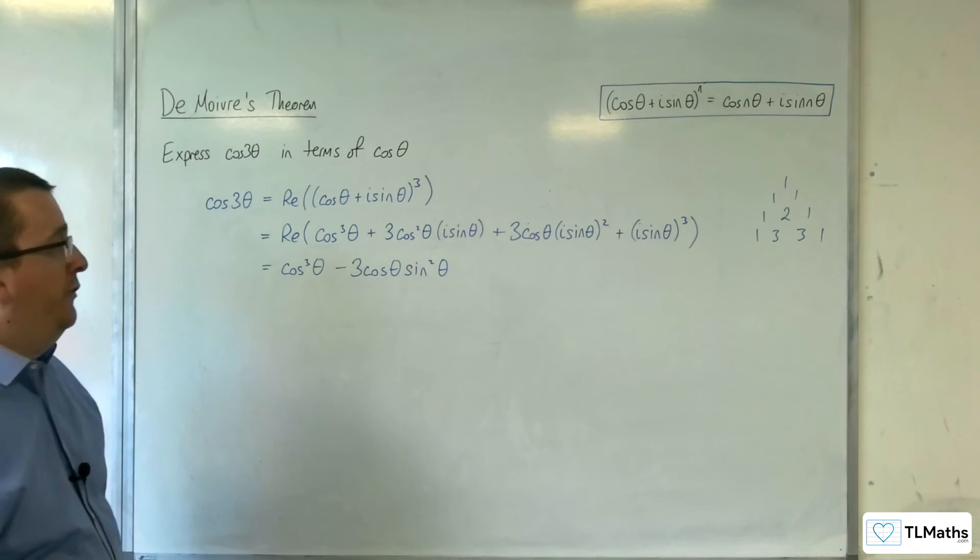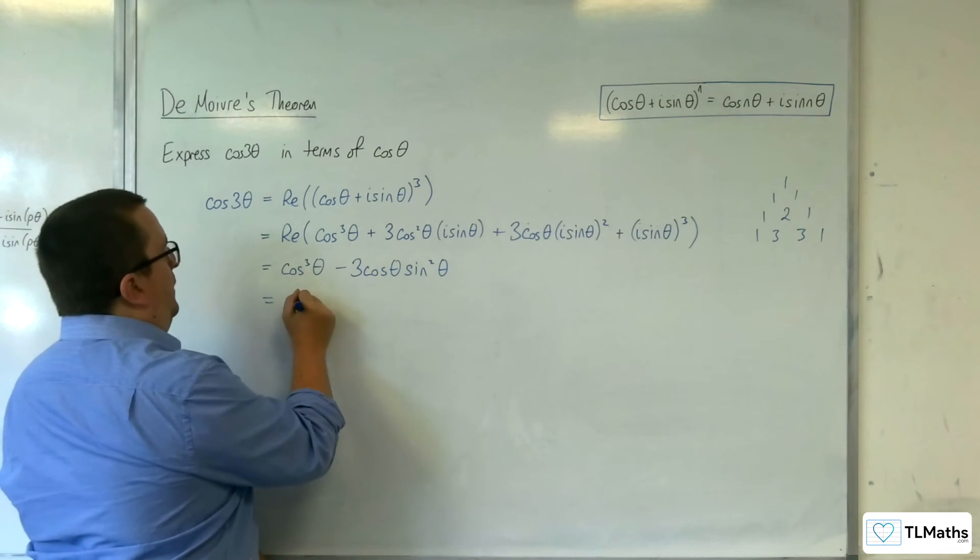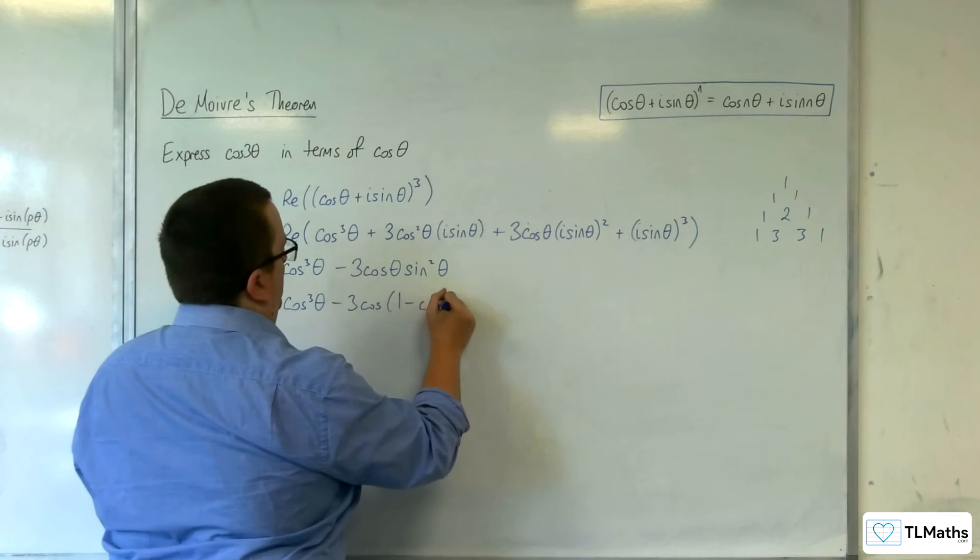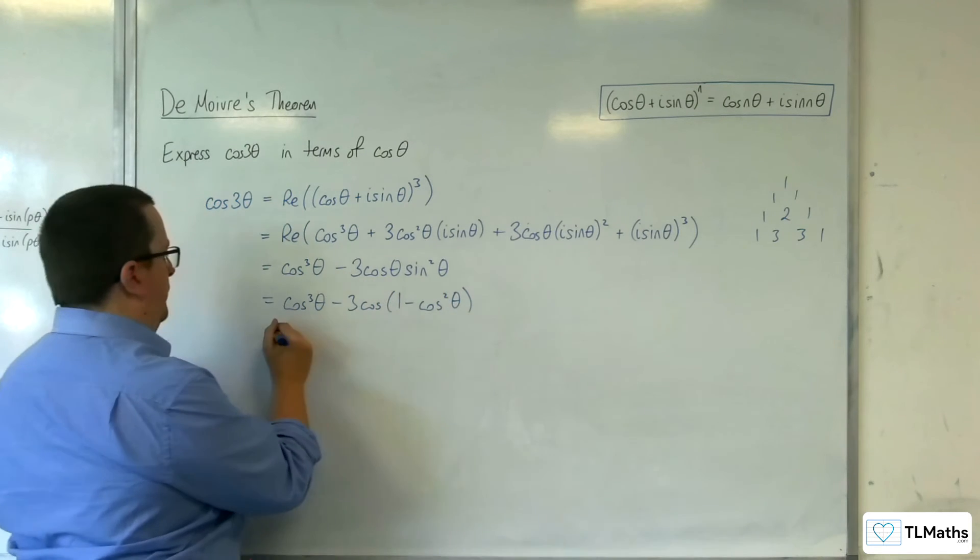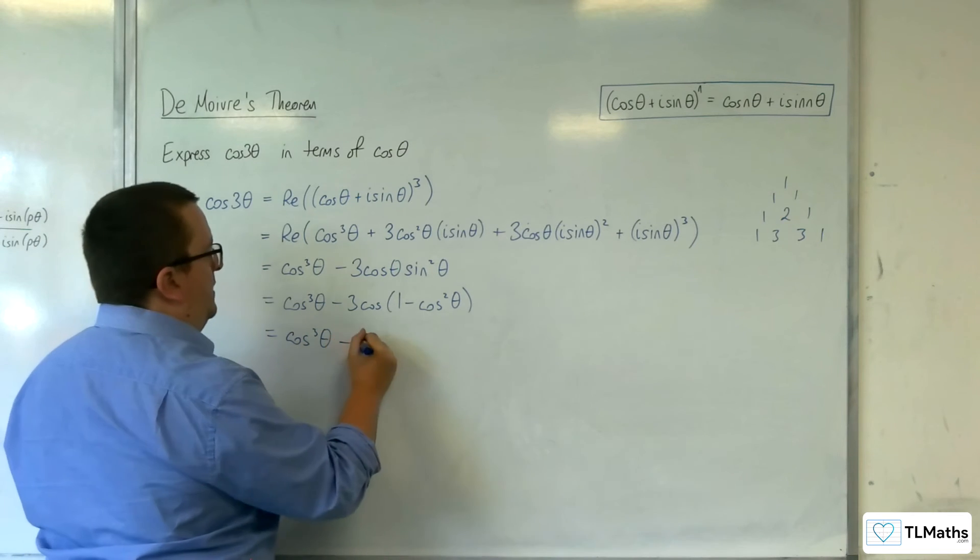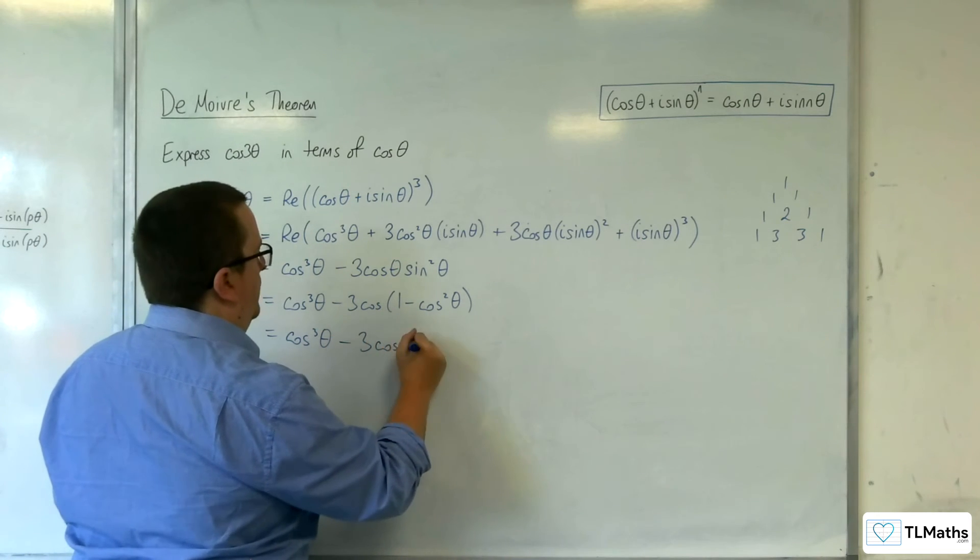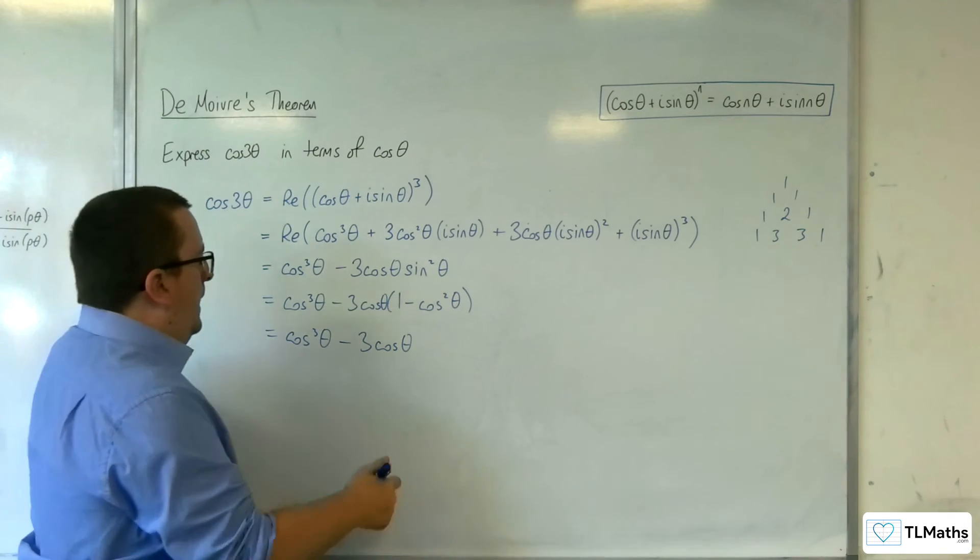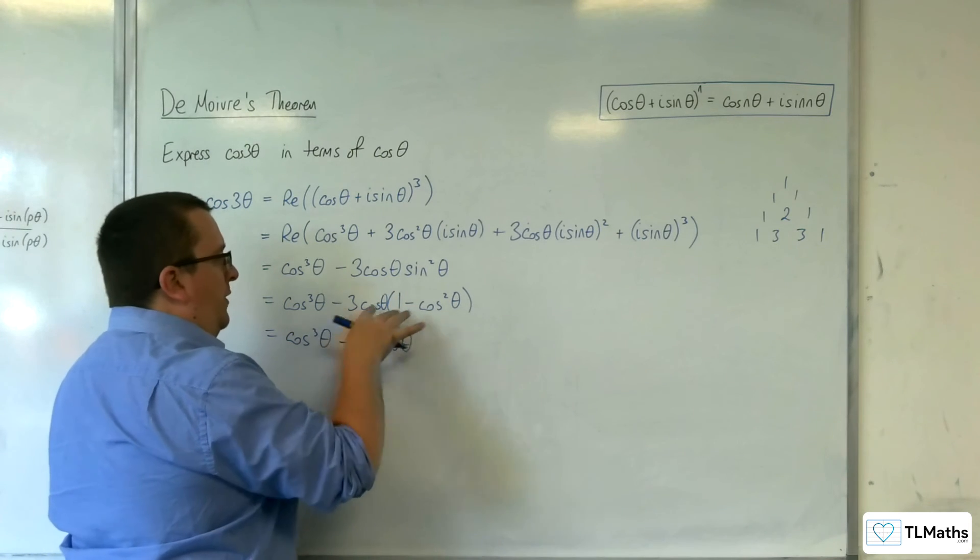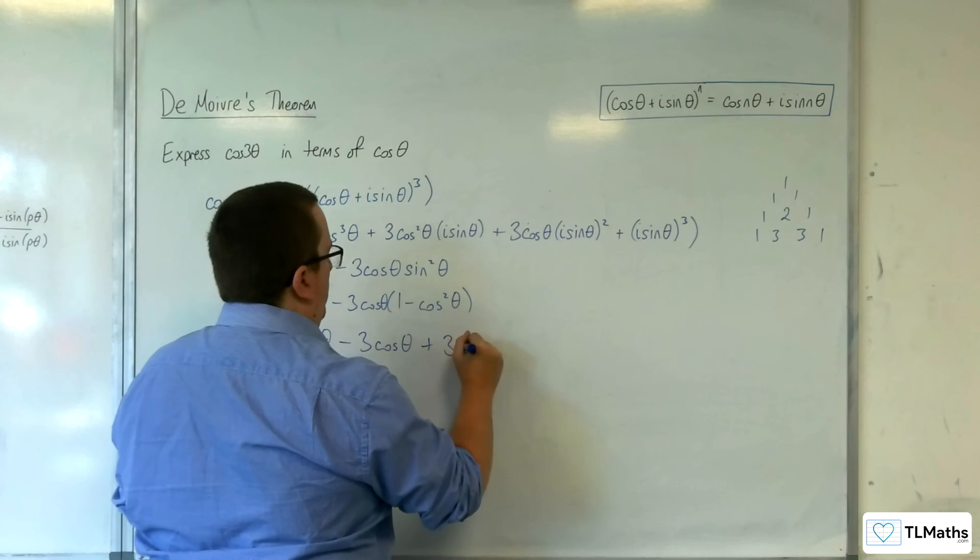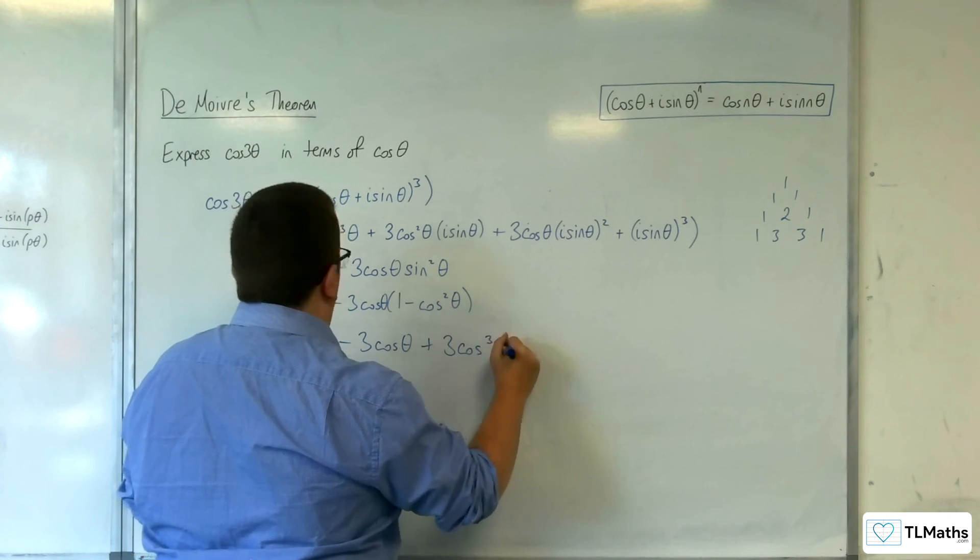Now if you replace the sine squared with 1 minus cosine squared, we can expand that out. So we have cosine cubed theta take away 3 cosine theta, then minus 3 cosine squared theta is plus 3 cosine cubed theta.